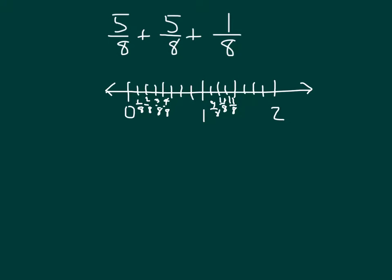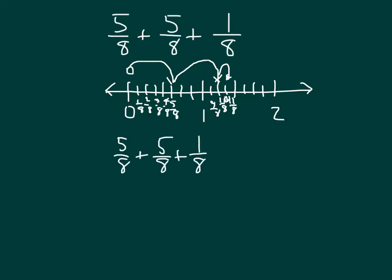Let's model this addition. We start with 0, and it says 5 eighths first, so we go all the way to 5 eighths. Then we're adding another 5 eighths, so we go 5 eighths more: 1, 2, 3, 4, 5 — we end up at 10 eighths. That makes sense because 5 plus 5 is 10. Then we're adding only 1 more eighth, going from 10 eighths to 11 eighths.